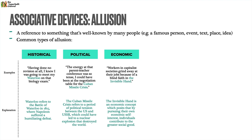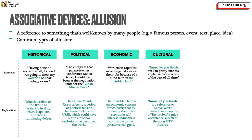Economic allusion: 'Workers in capitalist societies grind away at their jobs because of a blind faith in the invisible hand' — the invisible hand is an economic concept by Adam Smith, which posits that by pursuing their own economic self-interest, individuals actually contribute to the greatest social good. Cultural allusion: 'I'm going to let you finish, but I'm pretty sure that my apple pie recipe is one of the best of all time' — this references Kanye West's dramatic interruption of Taylor Swift's prize acceptance speech at the 2009 MTV Awards, which made a big splash in the media.